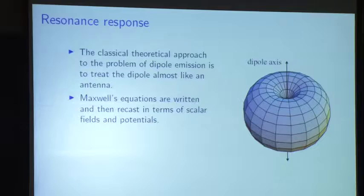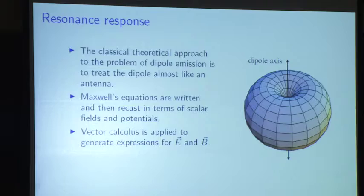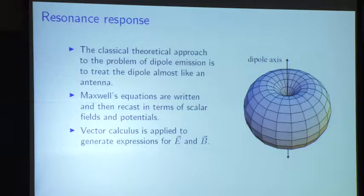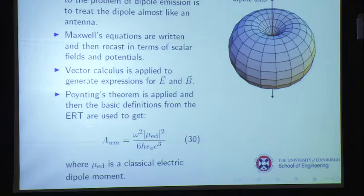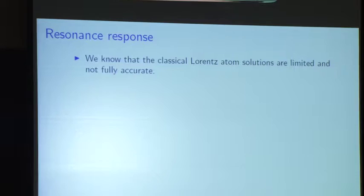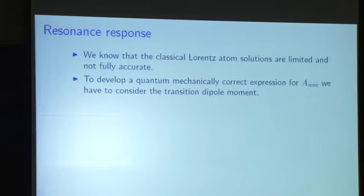Molecular scattering is really fast — it doesn't change populations and it's cleanly polarized. Laser-induced fluorescence is not cleanly polarized because molecules can rotate away in the gas phase. The classical approach for dipole emission treats this like an antenna — using Maxwell's equations, writing scalar fields and potentials, applying vector calculus to generate expressions for the electromagnetic field, and then applying the Poynting theorem to get irradiance. This gives a classical solution for the Einstein A coefficient, where that's a classical electric dipole moment — the Einstein coefficient goes as the magnitude of the classical electric dipole moment squared.